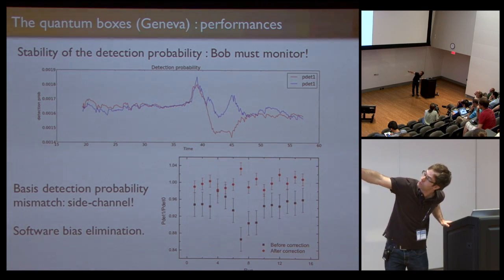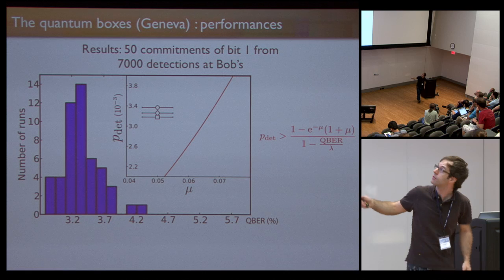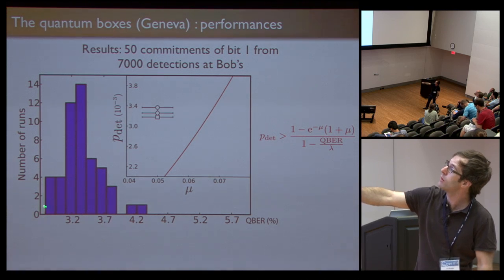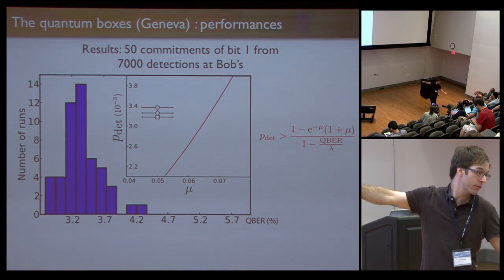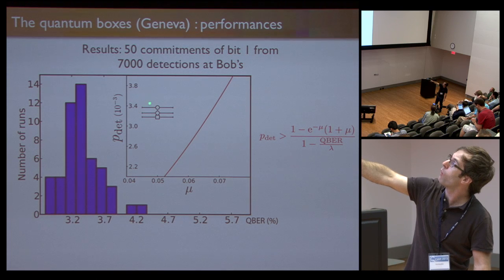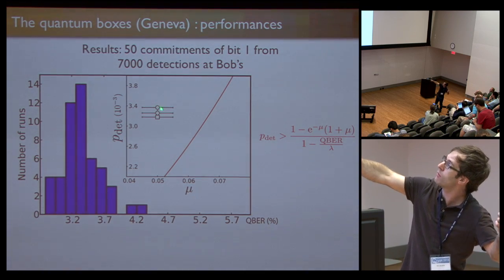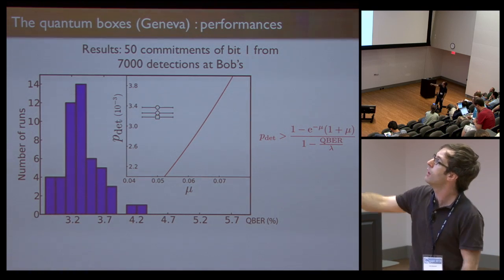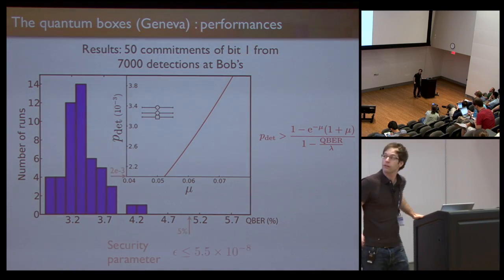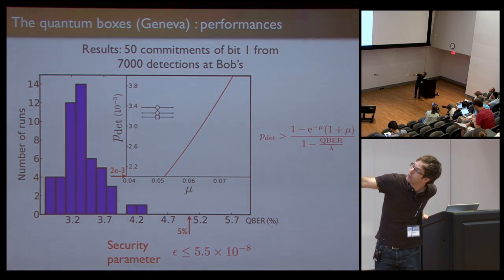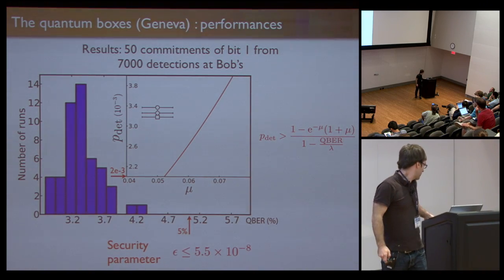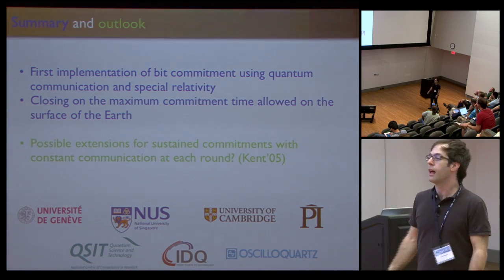We end up with something that's pretty much equal to one in terms of the ratio. The results are this: 50 commitments to bit one, 7,000 detections for each commitment. This is the distribution of the QBER. What you see here is the security curve that Jed presented, and these are our points. Among these 50 commitments, one gave us the largest detection probability, this one, and the smallest is this one. The spread is very small. All of them are well within the secure region, which is given by this equation here. In terms of the cutoff for the finite statistics, we used 5 percent here and then 0.2 percent, and it gives a security parameter of less than 10 to negative 7. It's fairly good in terms of that.